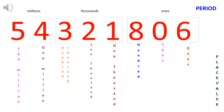Let's have a look at this number. The periods — ones, thousands, millions — are written on top of the number, and place values are written below: 6 ones, 0 tens, 8 hundreds, 1 thousand, 2 ten thousands, 3 hundred thousands, 4 one millions, and 5 ten millions. The number is read as: fifty-four million, three hundred twenty-one thousand, eight hundred six.